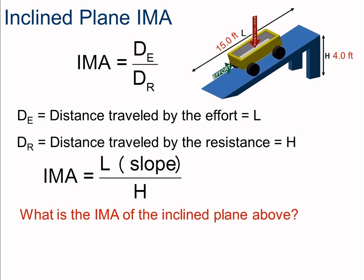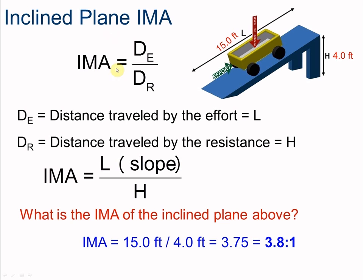The ideal mechanical advantage is 15 feet divided by 4 feet, giving us 3.75 — rounded to a 3.8 to 1 mechanical advantage. Greater than one, which is what we expected. We traveled a longer distance and provided a smaller force than the resistance, so 3.8 to 1 makes perfect sense.